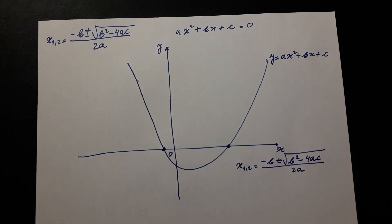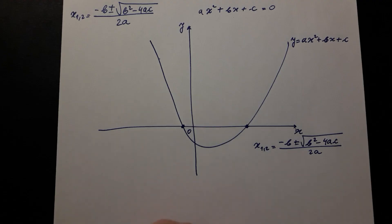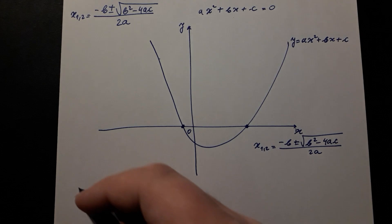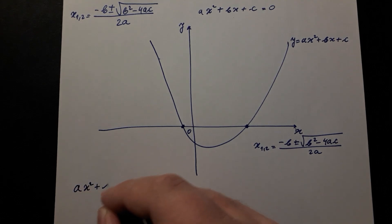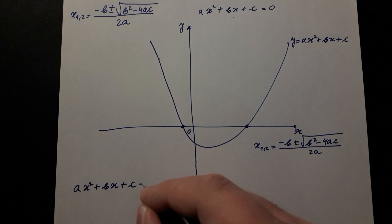These points are zeros of the quadratic function. In other words, these are the points at which the function intersects the line y equal to zero, or the x-axis. In algebraic terms, the quadratic formula is the solution of the equation ax squared plus bx plus c equal to zero.